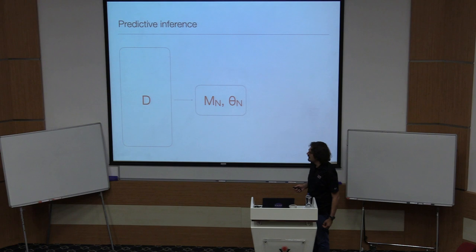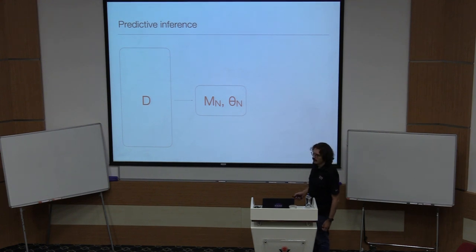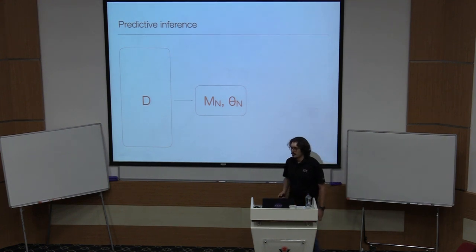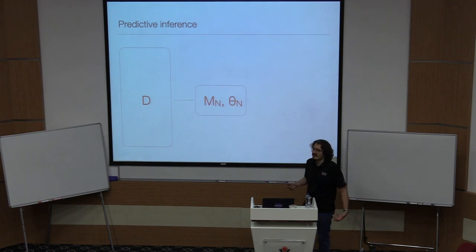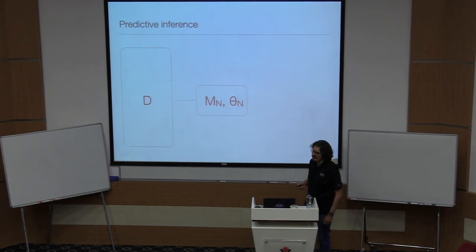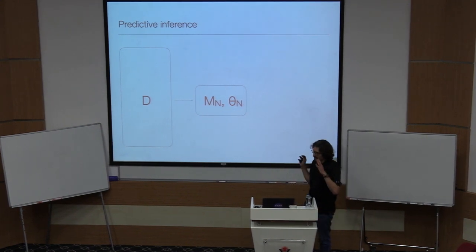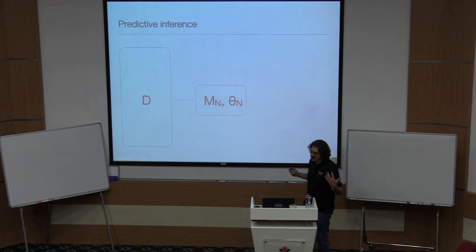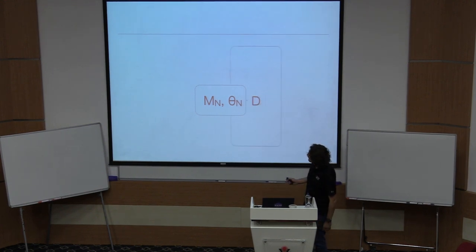N — the dimensionality of the model — can be anything depending on your model. For astronomical observations it is not fixed at two; it depends on what your model is. We will come to examples. I am being very abstract at the moment.